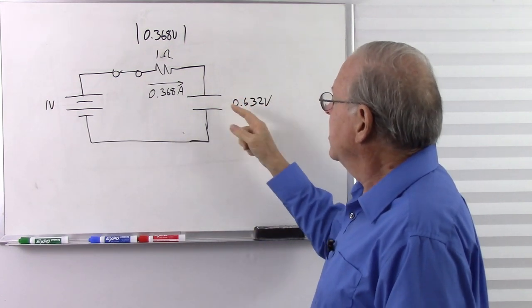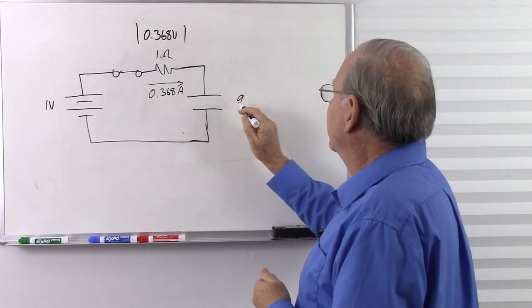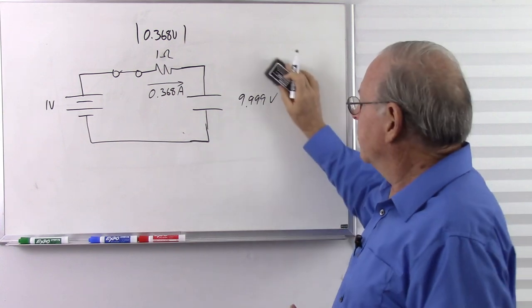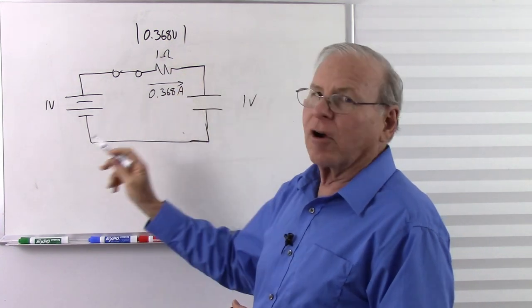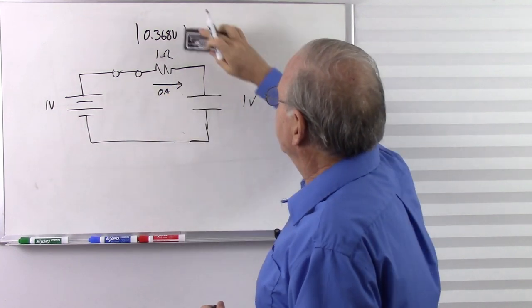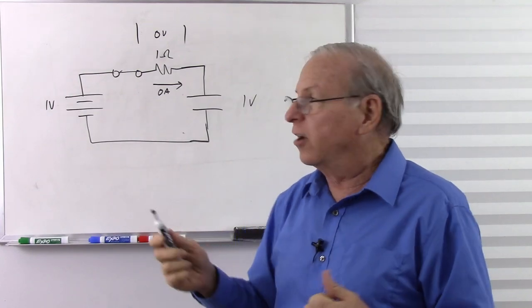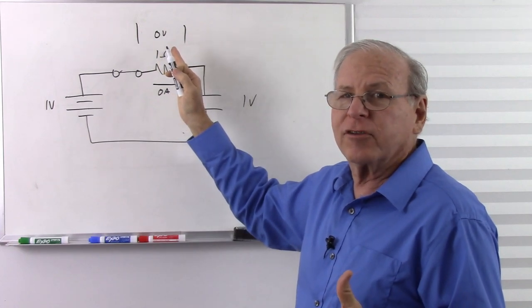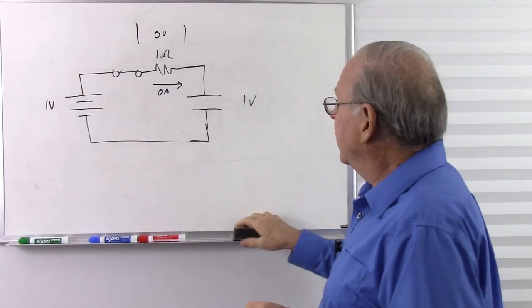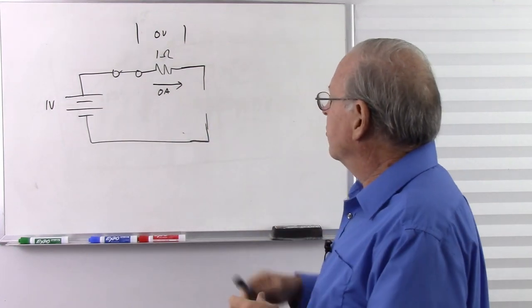Eventually, the capacitor voltage reaches essentially 1 volt — pushing back as hard as the source is pushing. No more current is flowing. With no current flow through the resistor, there's no voltage across it: 1 volt across the capacitor, 0 volts across the resistor — Kirchhoff's voltage law still holds. Now the capacitor looks like exactly what it is: two conductors separated by an insulator — an open circuit.